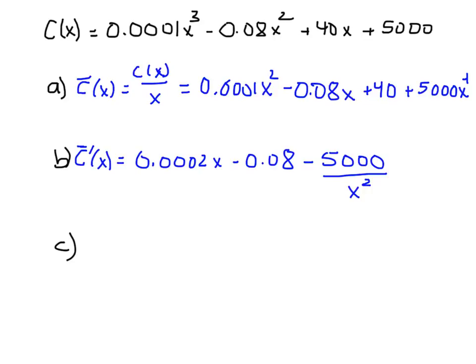We're asked to plug in 500 into the marginal average cost and see what value we get. Well, I've done this calculation: 500 times 0.0002 is 0.1 minus 0.08, and then minus 5000 divided by 500² is 0.02. And guess what, this all works out to be zero, which is interesting.